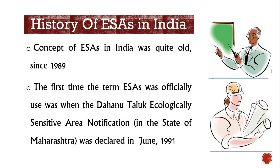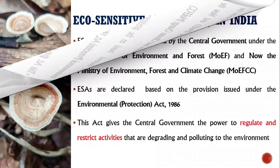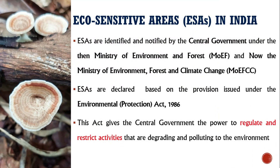Now let us have a look at the history of eco-sensitive areas in India. For your information, the concept of ESA in India is quite old and the conceptualization started all the way in 1989. However, the first time the term eco-sensitive area was officially used was when the Dahanur Taluk eco-sensitive area notification was published in 1991. For your information, eco-sensitive areas or ESA in India are identified and notified by the central government under the Ministry of Environment, Forest and Climate Change, or in short, MOEFCC.